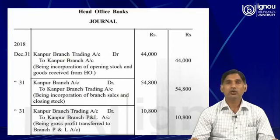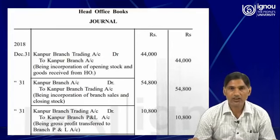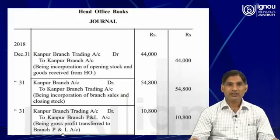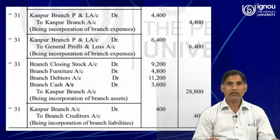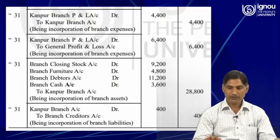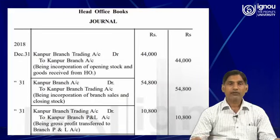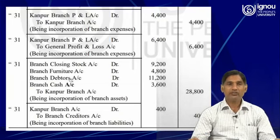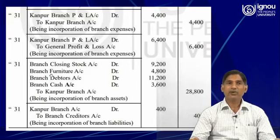This is how the transactions are recorded, and then for transactions which need to be recorded in the credit side, the reverse journal entry will be prepared. Now we have the assets and liabilities. As far as the assets are concerned, all assets have a debit balance.